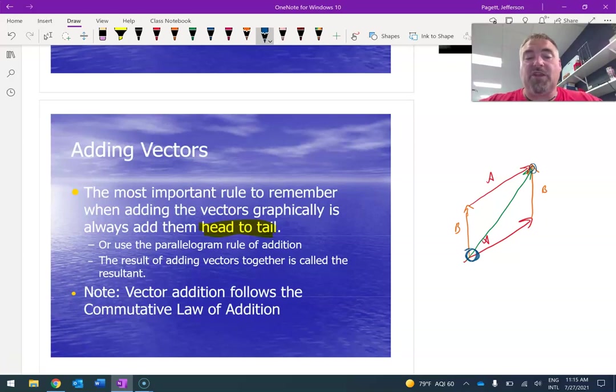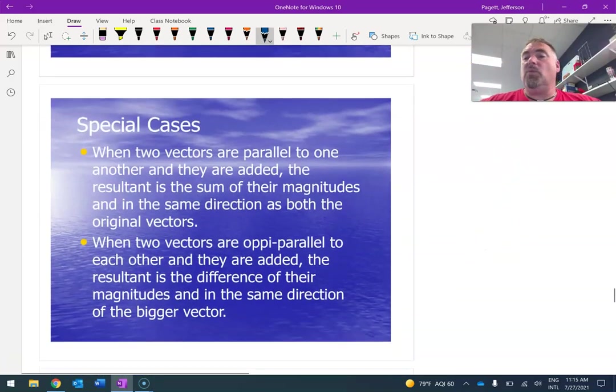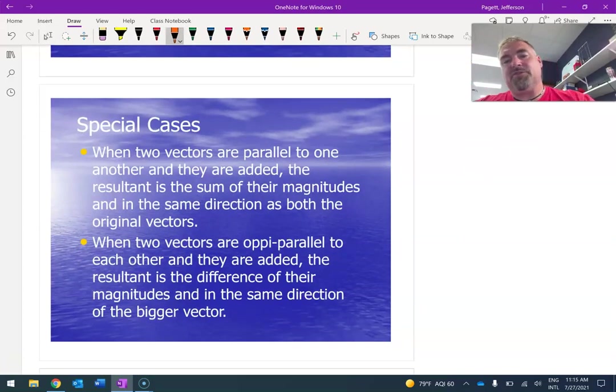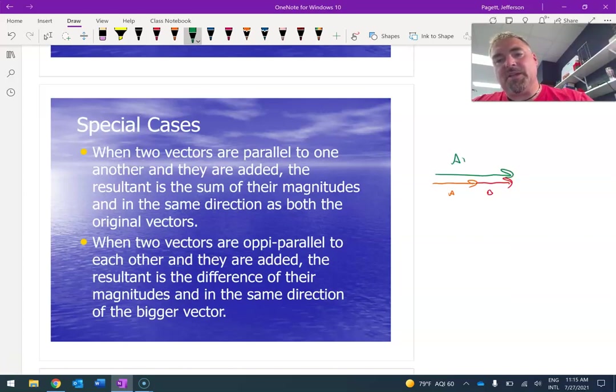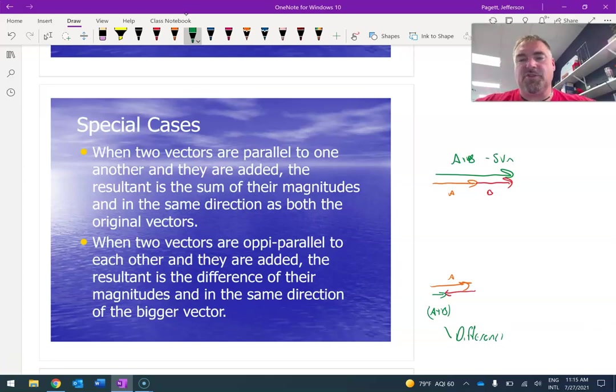Now, note, vector addition follows the commutative law of addition. Now, we've talked about these before. These are easy. If two vectors are parallel, so here's my vector A and here's my vector B. And they are parallel. My resultant is just the sum. It's A plus B. If they are oppi parallel, remember that word that doesn't exist or never existed until I came up with it. Here's my vector A. Here's my vector B. My resultant is going to be A plus B is actually going to be the difference. So it's going to be in the direction of the bigger vector.